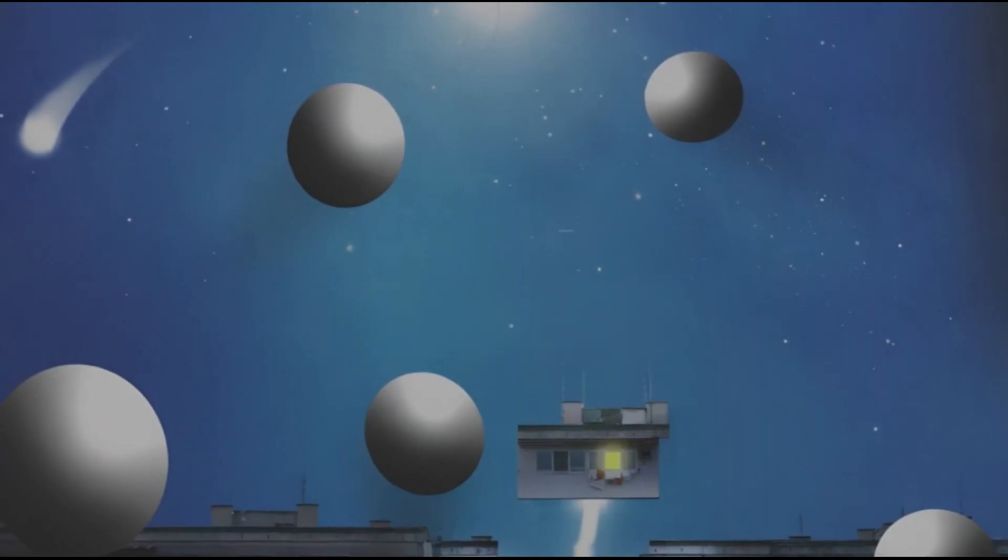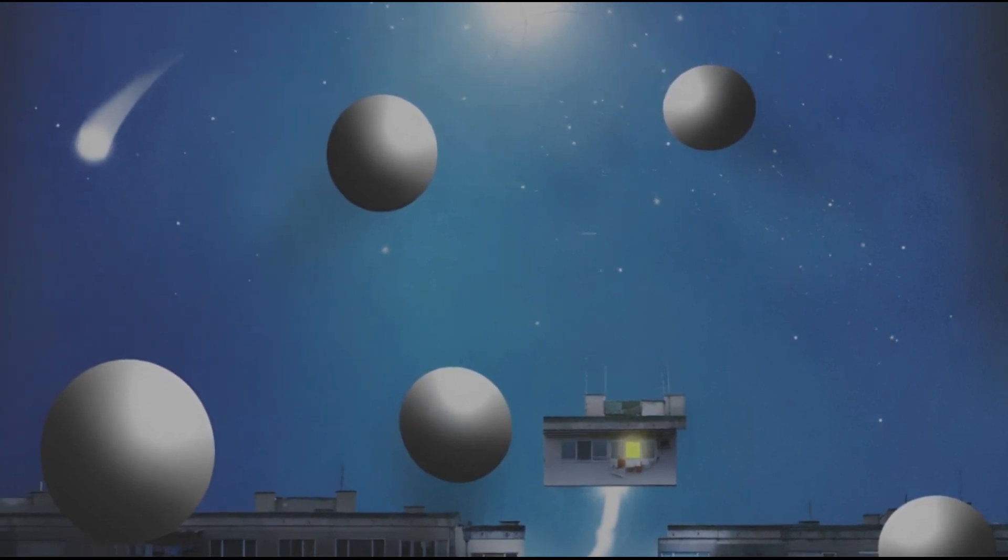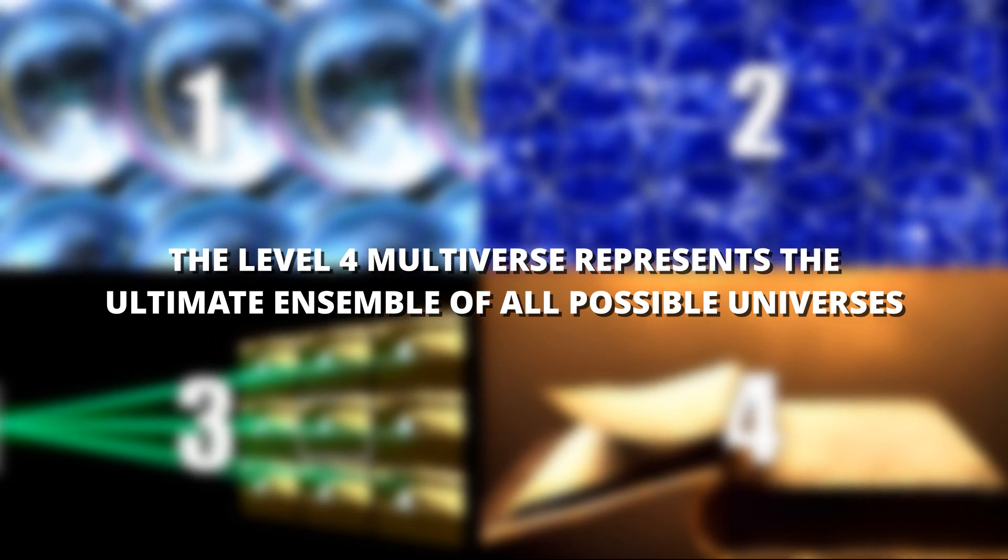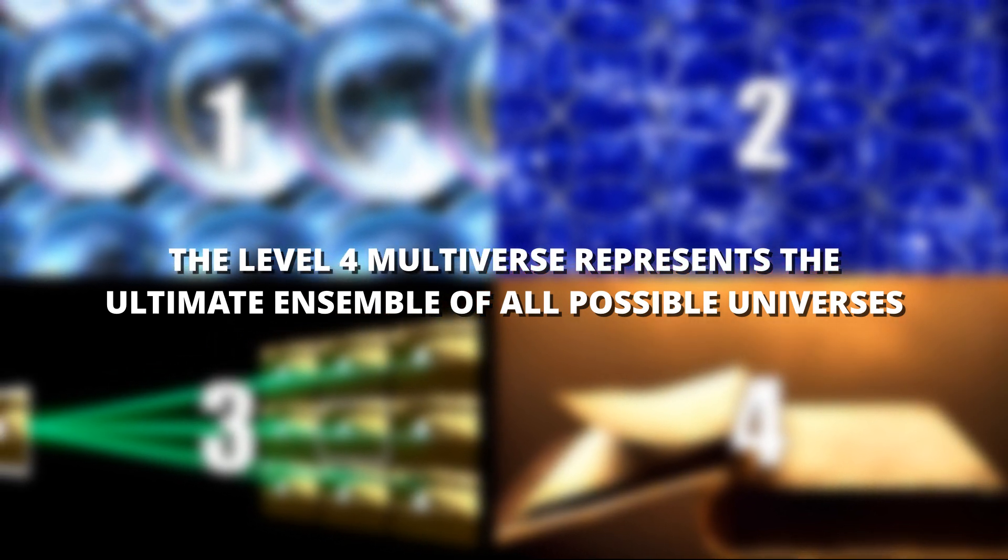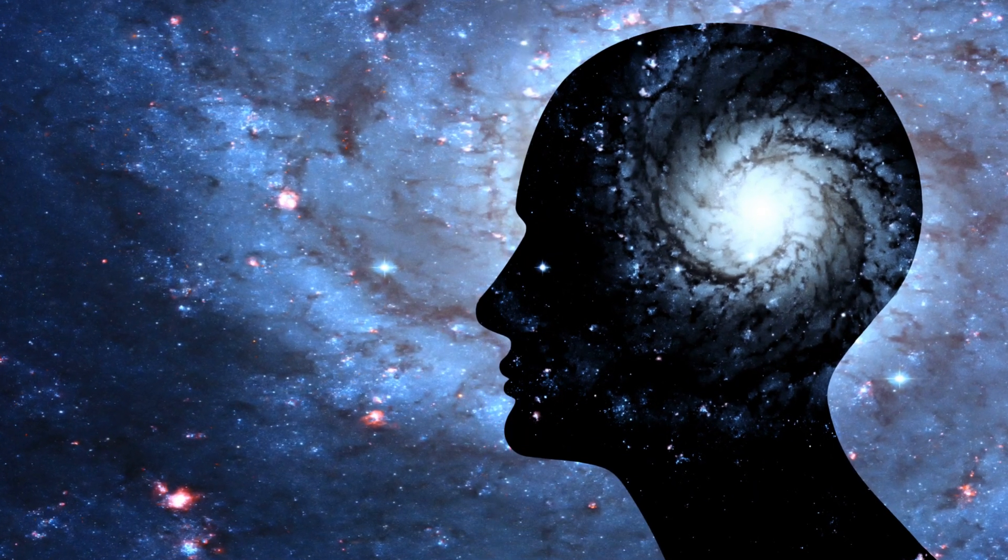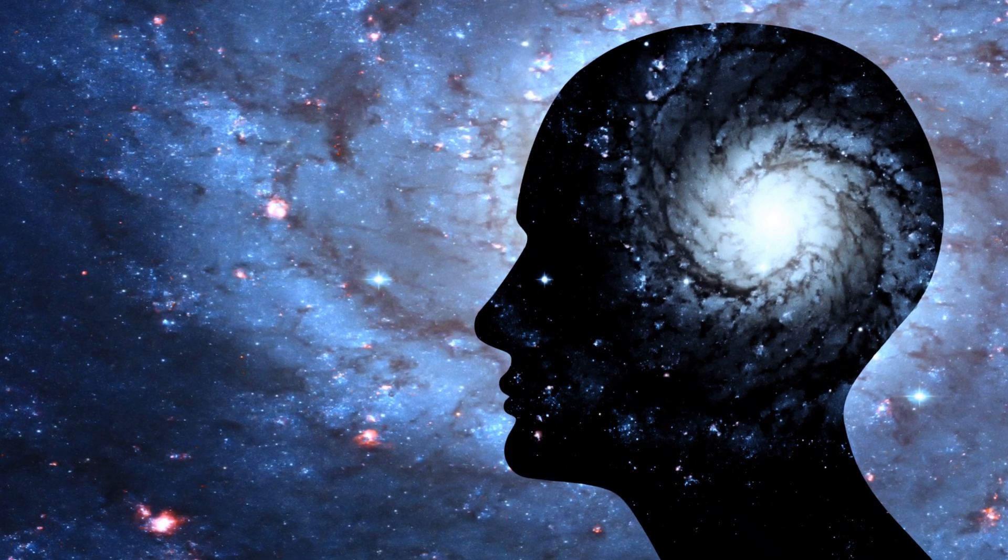Instead, all mathematical structures exist independently and equally, with no need for a base reality. The level 4 multiverse represents the ultimate ensemble of all possible universes, encompassing all other types of multiverses. It's a concept that pushes the boundaries of our understanding and challenges our perception of reality.